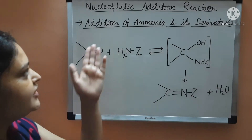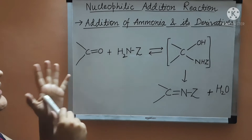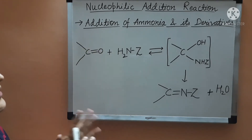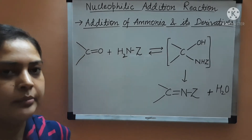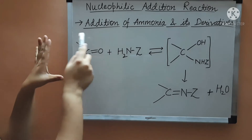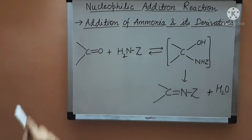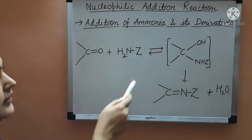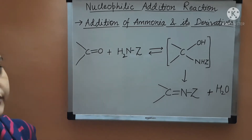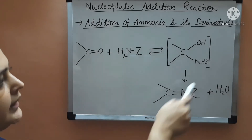Hello everyone, today we'll learn addition of ammonia and its derivatives to carbonyl compounds. It is also an example of nucleophilic addition reaction — this is the last example of nucleophilic addition reaction of carbonyl compounds. We take an aldehyde or ketone, and we will add ammonia or its derivative, represented by NH2Z, where Z can be hydrogen, an alkyl group, a hydroxy group, and so on.